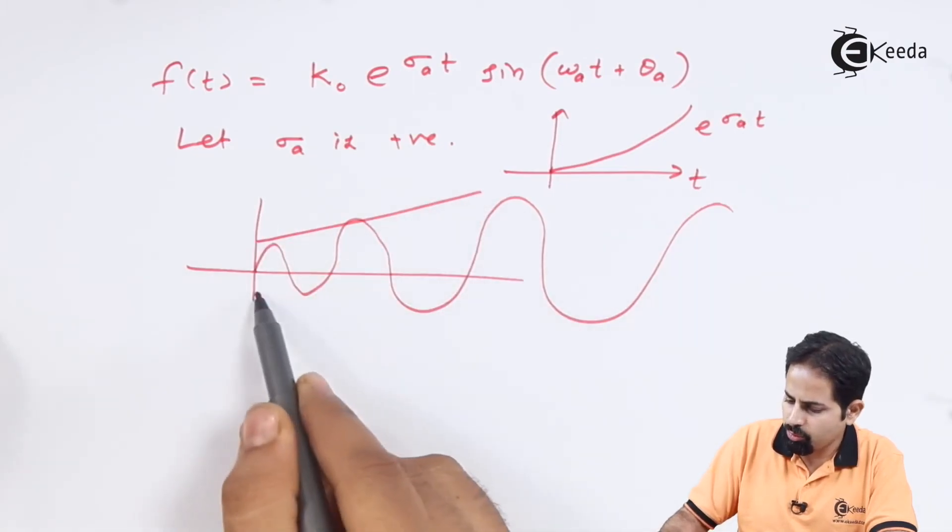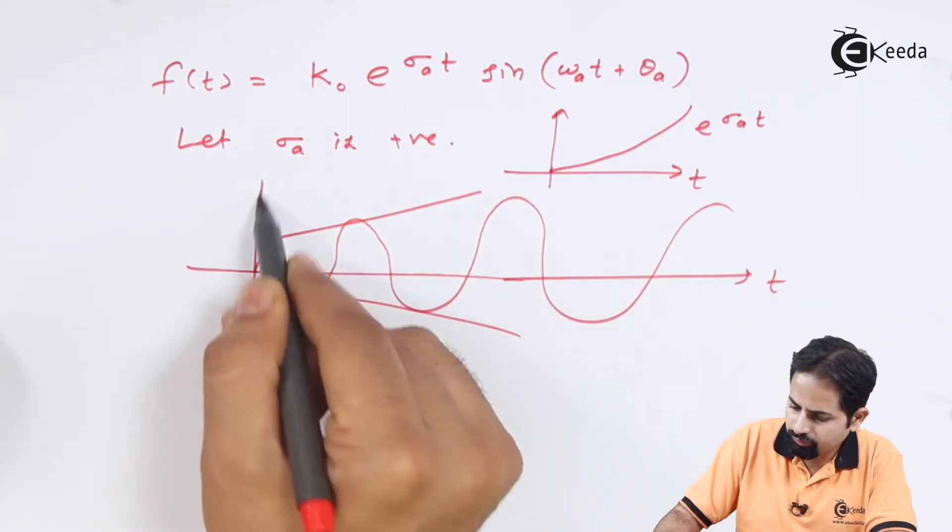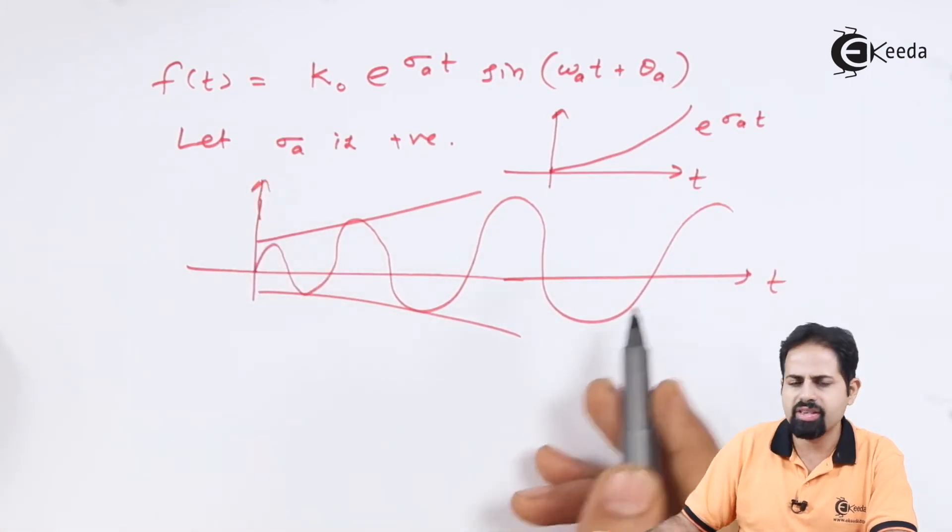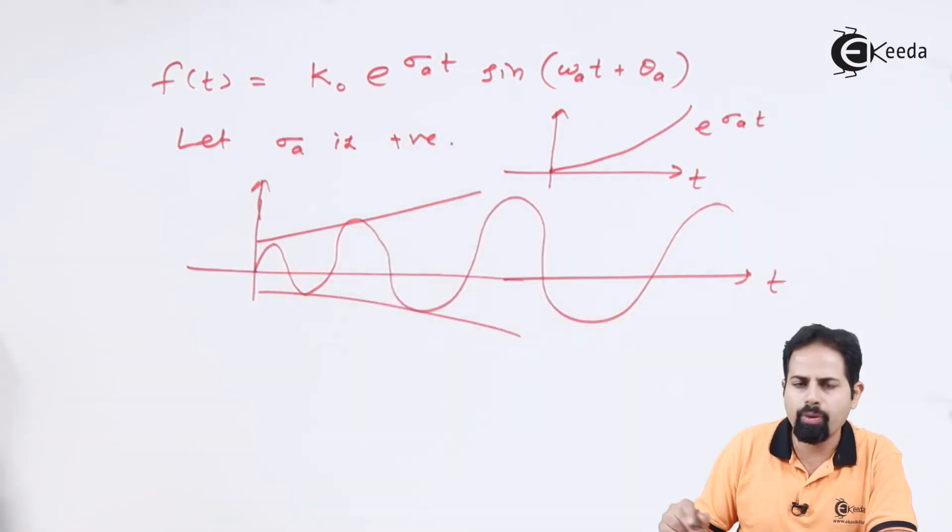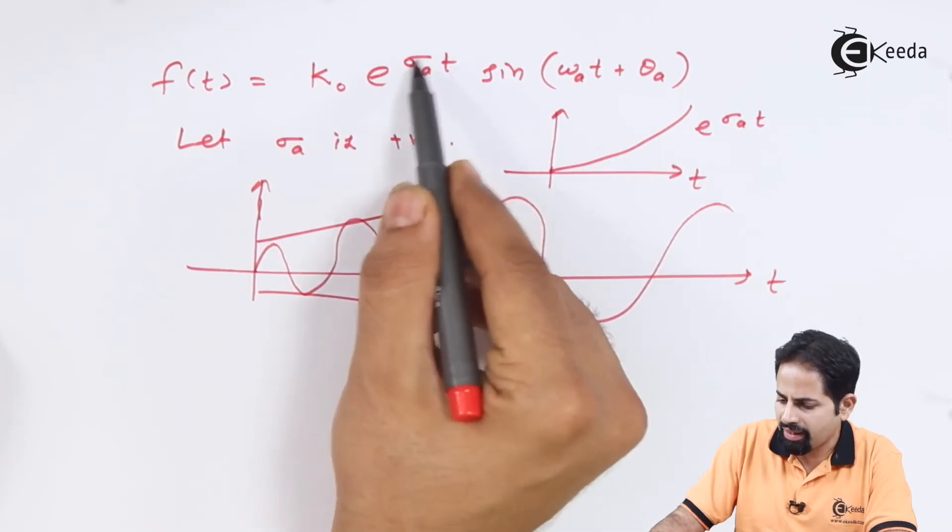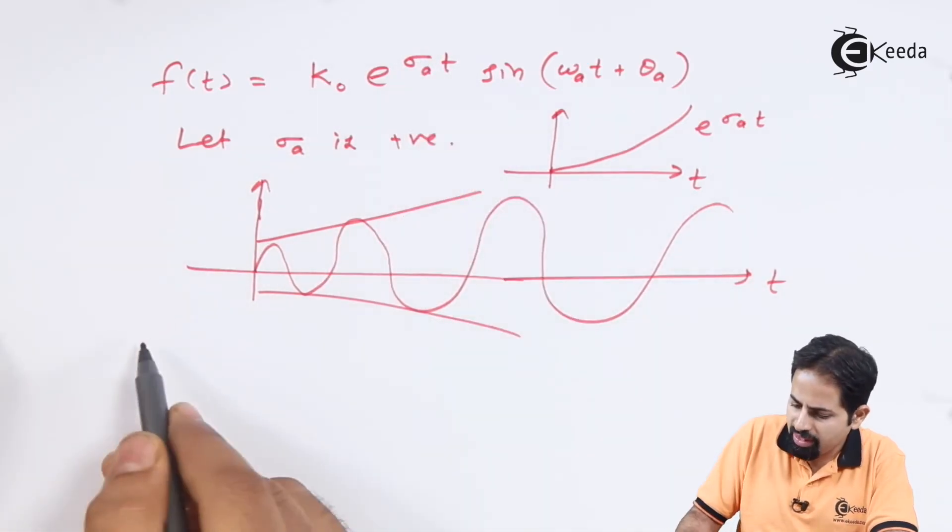So the graph of this will be and so on, which is increasing exponentially like this. And this is not a real graph. This is not going to be true at real time. So this sigma cannot be positive.